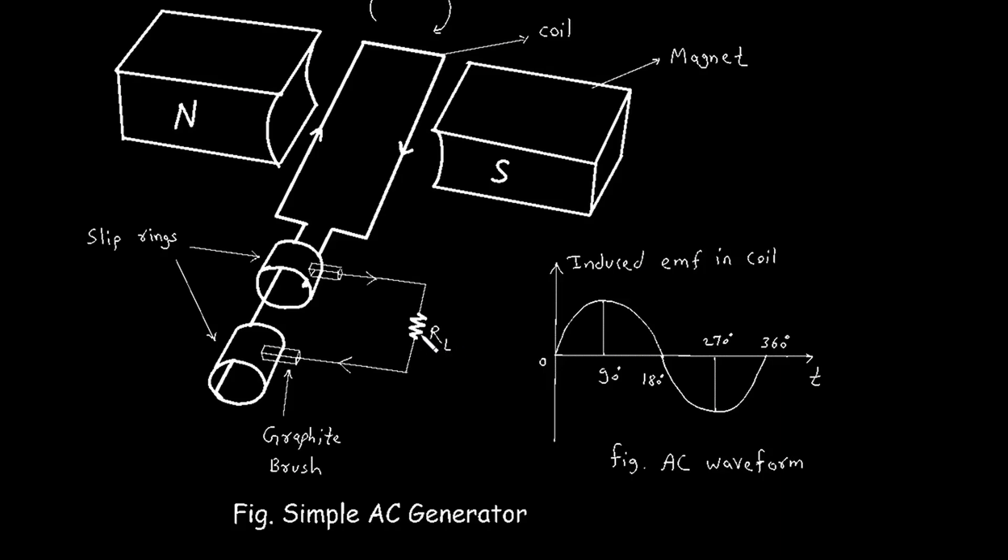And this is a load resistor RL. These slip rings are rotating because if this coil is rotating, then these slip rings are also rotating. But these brushes are fixed.